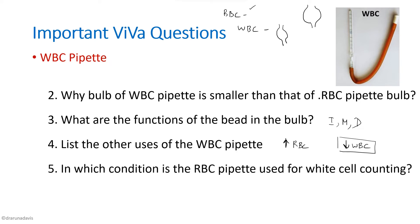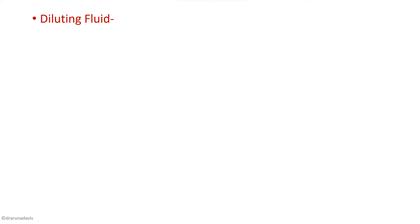In which conditions is the RBC pipette used for white cell counting? Here also the same principle applies — the RBC pipette is used only when the cell count is more. When will the white cell count be more? It will be in malignancies like leukemia. So for that, we use an RBC pipette.